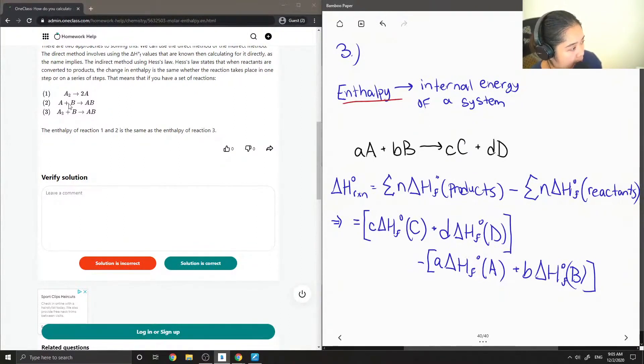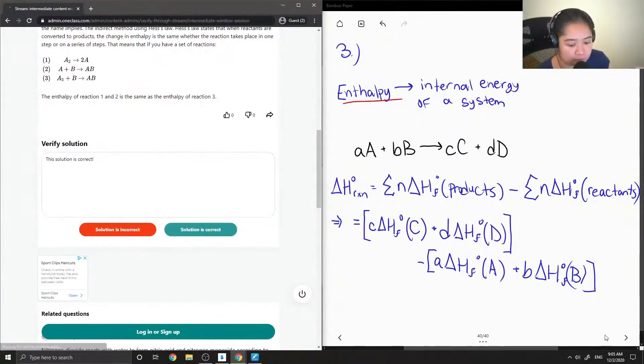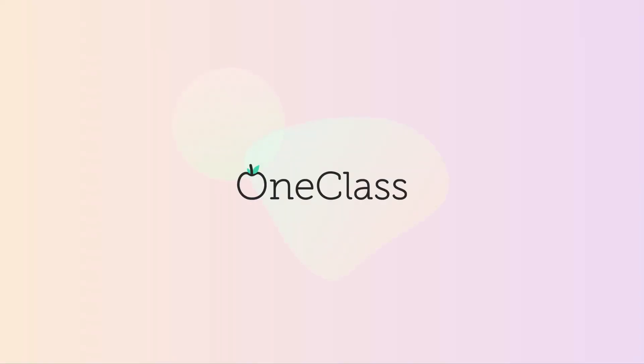So if we just look at 1 and 2, you'll notice that 2A is on the products of reaction 1 and there's a single A as a reactant of reaction 2. Therefore we can cross out the A in reaction 2 and we can cross out one of the A's there as well. So I'll just verify that this solution is correct. All right.